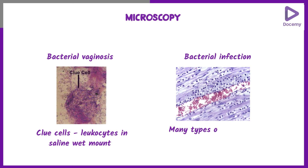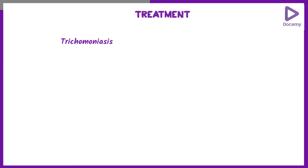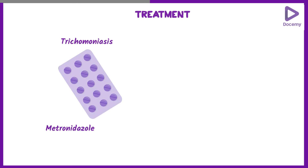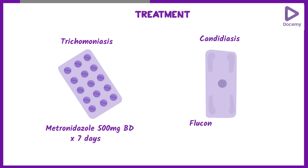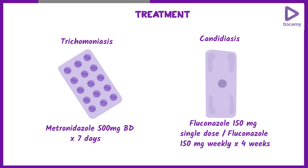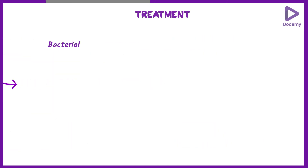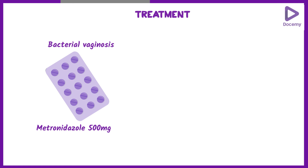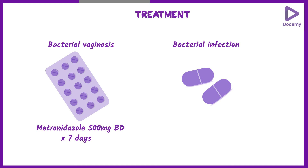In a bacterial infection you will see many types of leukocytes. The treatment for Trichomoniasis is metronidazole 500 mg twice daily for 7 days. Candidiasis patients are treated with fluconazole 150 mg as a start dose, or a weekly dose for a duration of 4 weeks. Patients with Bacterial Vaginosis are treated with metronidazole — the drug of choice — 500 mg twice daily for 7 days. A bacterial infection can be treated with the respective antibiotics.